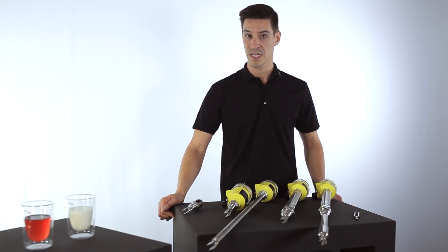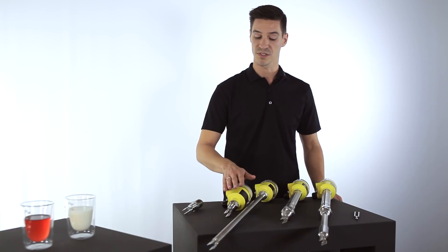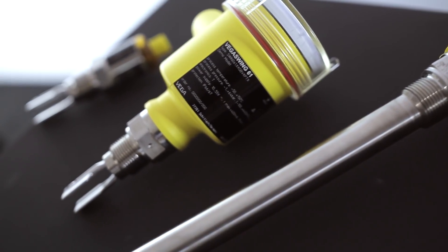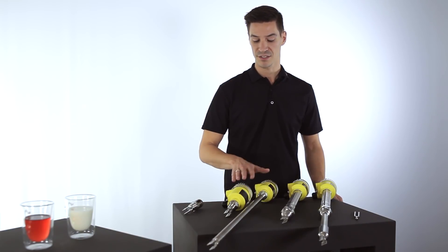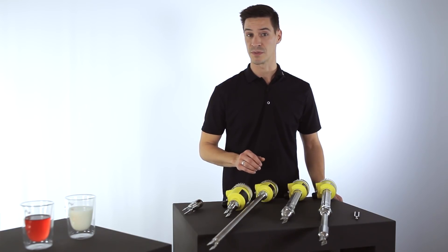If you have a more demanding application, we have the Vegavib Wing 61 and 63. Compact version and a version with a tube extension up to 6 meters. These instruments are available with all relevant approvals.